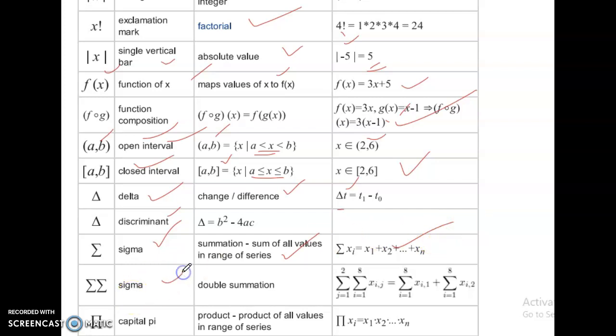Sigma. Double summation. Here, summation over j equal to 1 to 2, i equal to 1 to n, Xi j equal to summation i equal to 1 to n, Xi j plus summation over i equal to 1 to n, Xi j equal to 2.